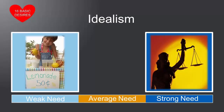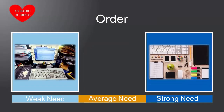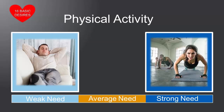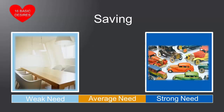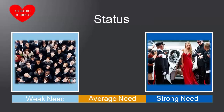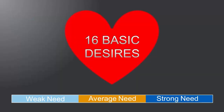The remaining needs are: Idealism, the desire for social justice; Independence, the desire for self-reliance; Order, the desire for structure; Physical Activity; Power — how much you desire power in the Reese Profile tells us how much you want to work; Romance; Savings, the desire to collect; Social Contact; Status — how much you desire status tells us how much attention you want; Tranquility; and Vengeance. That is the list of sixteen needs.